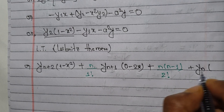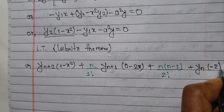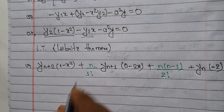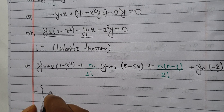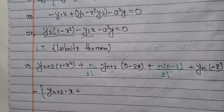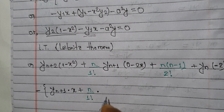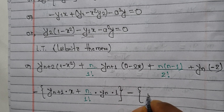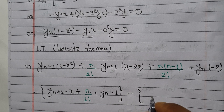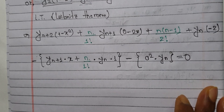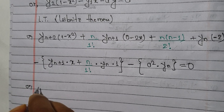Continuing with Leibniz's theorem for the term -x·y₁, differentiating n times gives: -x·y_(n+1) plus n·(-1)·y_n. The a²·y term differentiates to a²·y_n. So combining all terms, the full nth derivative expression is set equal to 0.